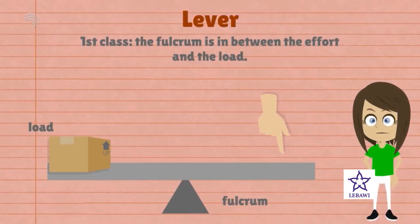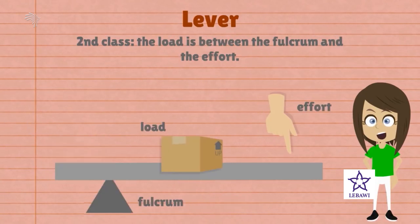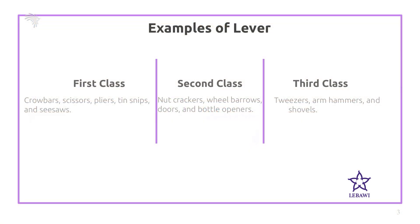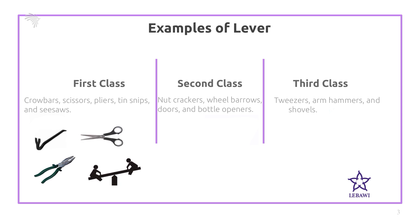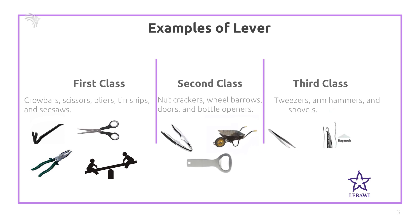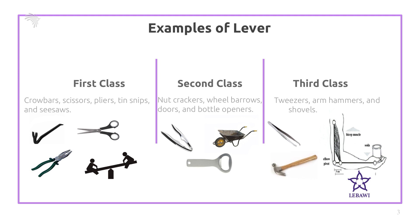For the first class lever, the fulcrum is placed between the load and the effort. For the second class lever, the load is between the effort and the fulcrum. And for the third class lever, the effort is between the load and the fulcrum. For first class lever, we can take crowbars, scissors, pliers, and tin snips as examples. For second class lever, we can take nutcrackers, wheelbarrows, doors, and bottle openers. And tweezers, hammers, and shovels are examples of third class lever.